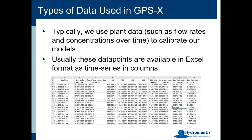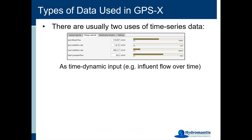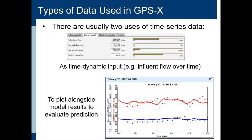You want to set this up so that the data can either drive a simulation — making changes to an input parameter — or you can plot this information alongside the predictions of the model. When you're doing a time dynamic input, you're basically using our file input controller feature. So you want to have time dynamic inputs controlling how flow, concentrations, and other things change as the simulation proceeds. GPSX will automatically take that data and change that parameter as the simulation moves along.